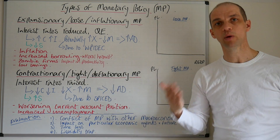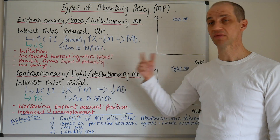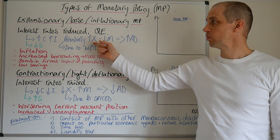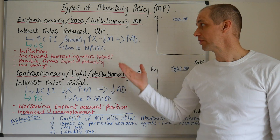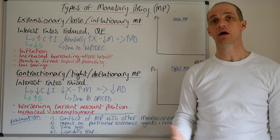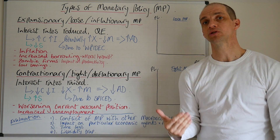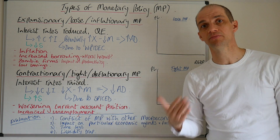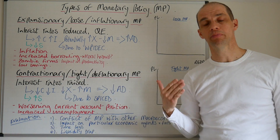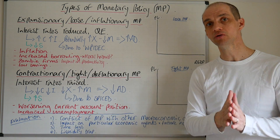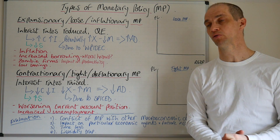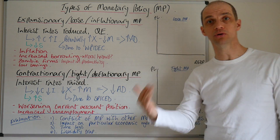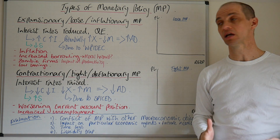So therefore we have a weak pound — imports become dear and exports become cheap. As a direct consequence, we potentially have this scenario where exports become more price competitive and imports become dearer. This can help the net exports component within the aggregate demand formula and, of course, this can help to boost aggregate demand in the economy.